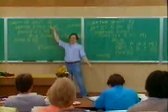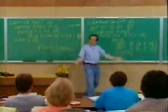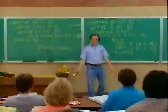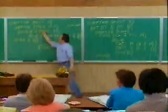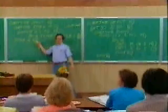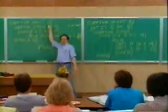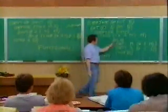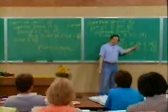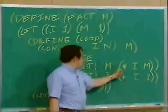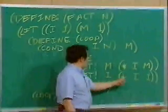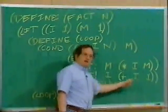So here I wasn't changing. I was making another copy. Because the substitution model says you copy the body of the procedure with the argument substituted for the formal parameters. Here I'm not worrying about copying. Here I've changed the value of m. I also then change the value of i to i plus 1 and go buzzing around.